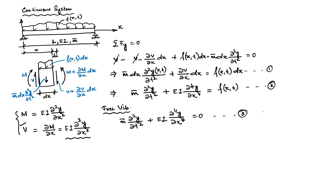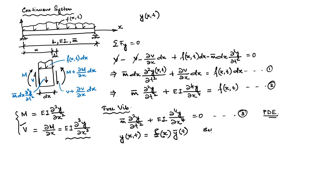This is a PDE, as you can see, because we started with the displacement field y as a function of x and t. There are different ways to solve PDEs, but one way is the separation of variables. We write y(x,t) as the product of φ(x), which deals with variation along the length of the beam, and ȳ(t), which takes care of the time-dependent component. This is what is called separation of variables.